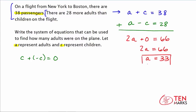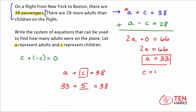Now that we have a value for A, we can substitute it into either equation. Using the first equation — A plus C equals 38 — with A equal to 33: 33 plus C equals 38, so C equals 38 minus 33, which equals 5. The number of children on the flight is 5. In this lesson, you've learned how to translate a word problem into a system of equations, and how to use both the substitution and elimination methods. I hope this makes solving certain problems a little easier for you in the future. Thanks for watching.